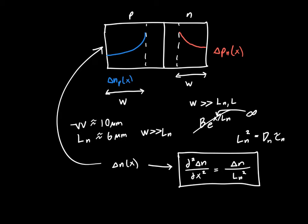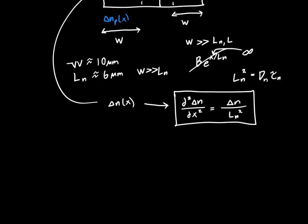And in this case, we're going to proceed to solve it, but we're going to do so without throwing out any of the extra terms. So we know in general, the solution to this differential equation looks like this. Delta n of x is going to be equal to some coefficient a times e to the minus x over Ln plus some coefficient b times e to the x over Ln.